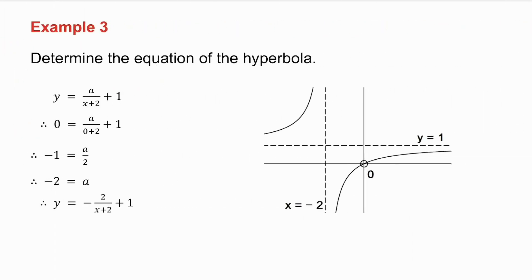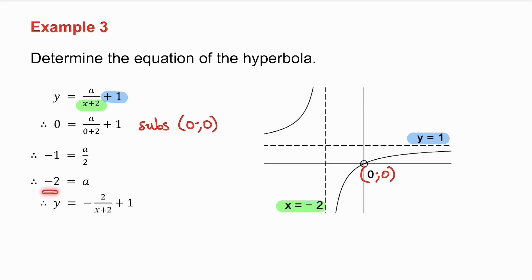With the hyperbola, there is an asymptote of y equals 1, so we add 1 at the end of the equation. There's a second asymptote of x equals minus 2, which means x plus 2 goes under the fraction. The graph passes through the origin, so we substitute (0, 0), solve for a, and there is the equation of the hyperbola.